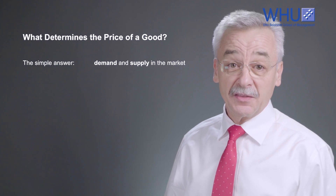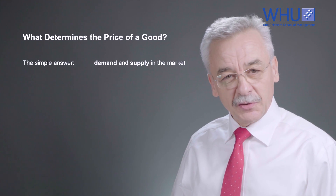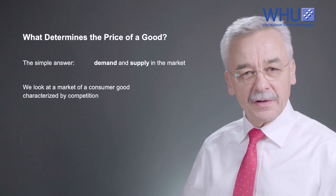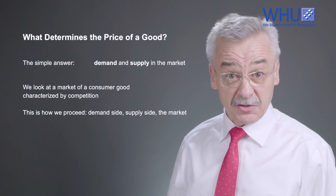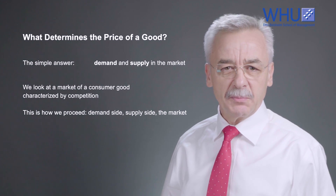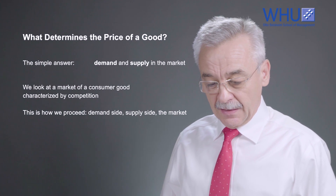Welcome to the discussion of what determines the price of a good. The simple answer is demand and supply in the market. But how does it actually work? Let us look at a market for a consumer good characterized by competition — rivalry between those who want to buy goods and those who want to sell goods. We will proceed in three steps: first the demand side, then the supply side, and then we put things together and look at the market.